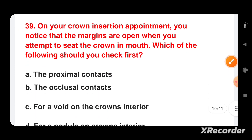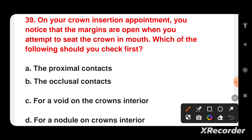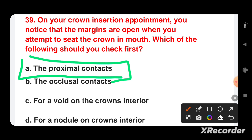On a crown insertion appointment, you notice that margins are open when you attempt to seat the crown. Which of the following should you check? Options are: proximal contact, occlusal contact, void on crown interior, or nodule on crown interior. During crown insertion, you should check the proximal contact first, as this refers to the contact point between the crown and adjacent teeth. If margins remain open for years, tooth decay can develop underneath the crown.